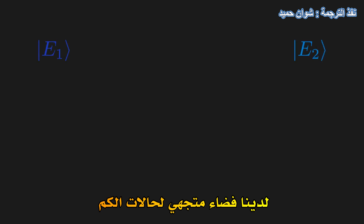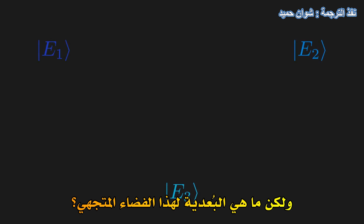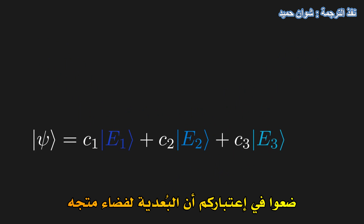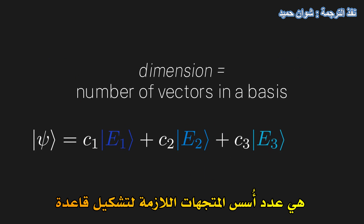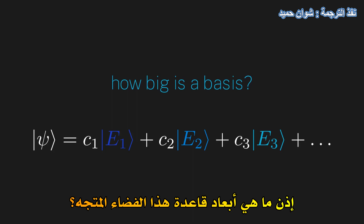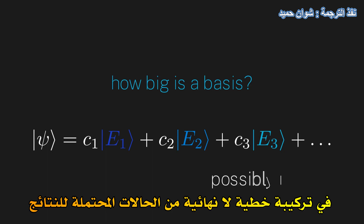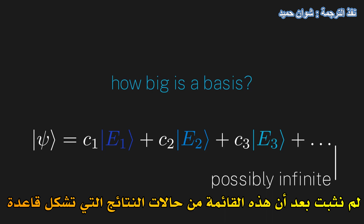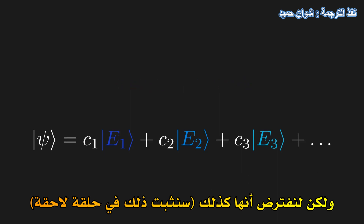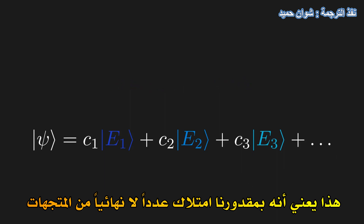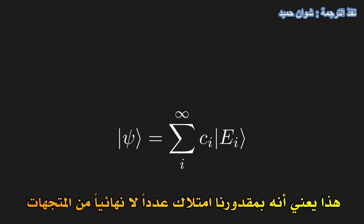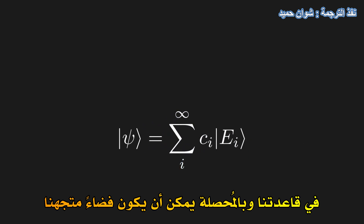Now I want to ask a simple but very important question. We have a vector space of quantum states, but what is the dimension of this vector space? Remember that the dimension of a vector space is the number of vectors needed to form a basis. So how big is a basis in this vector space? It is possible for a quantum state to be in an infinite linear combination of outcome states. We haven't proven that this list of outcome states forms a basis, but let's assume that they do — we'll prove this in a later episode. This means that we can have infinitely many vectors in our basis, and therefore our vector space can have infinite dimension.